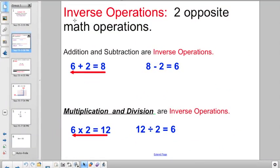Starting off with a little bit of review. If you remember about inverse operations, we stated those are just two opposite math operations. Addition and subtraction we learned earlier are inverse operations. You can have 6 plus 2 equals 8, but then you can also go the opposite direction with the opposite sign and end up with 8 minus 2 equals 6. Well, the same thing works with multiplication and division. They are also inverse operations.